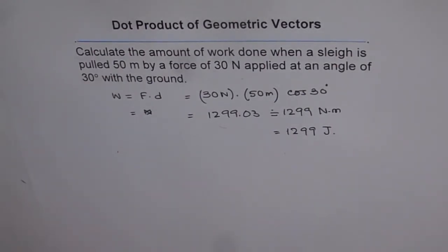This is the work done on the sledge when pulled 50 meters by a force of 30 newtons. This is a good application of the dot product. Remember that work done is a scalar quantity, just a number. Thank you.